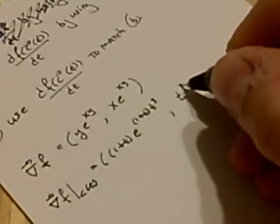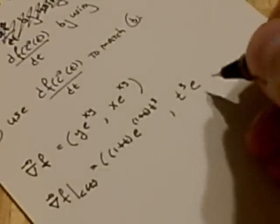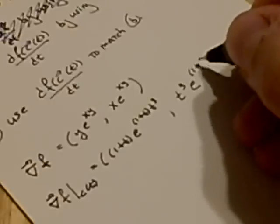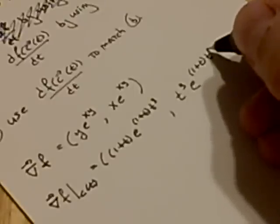And then the next component, we have the x, which is t cubed, again times e to the 1 plus t, t cubed. So this is the gradient of the function on the path, restricted to the path.